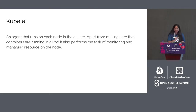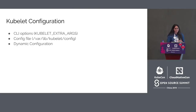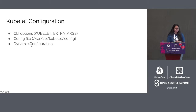Kubernetes provides various Kubelet options to configure garbage collection at the node level. Command-line input options are flags added as Kubelet extra args environment variables. Options can also be set in the Kubelet config file at the path /var/lib/kubelet/config. A third option is dynamic configuration, added in the 1.11 release, which allows an admin to define and store configurations as ConfigMaps in the API server, which are later fetched by Kubelet.